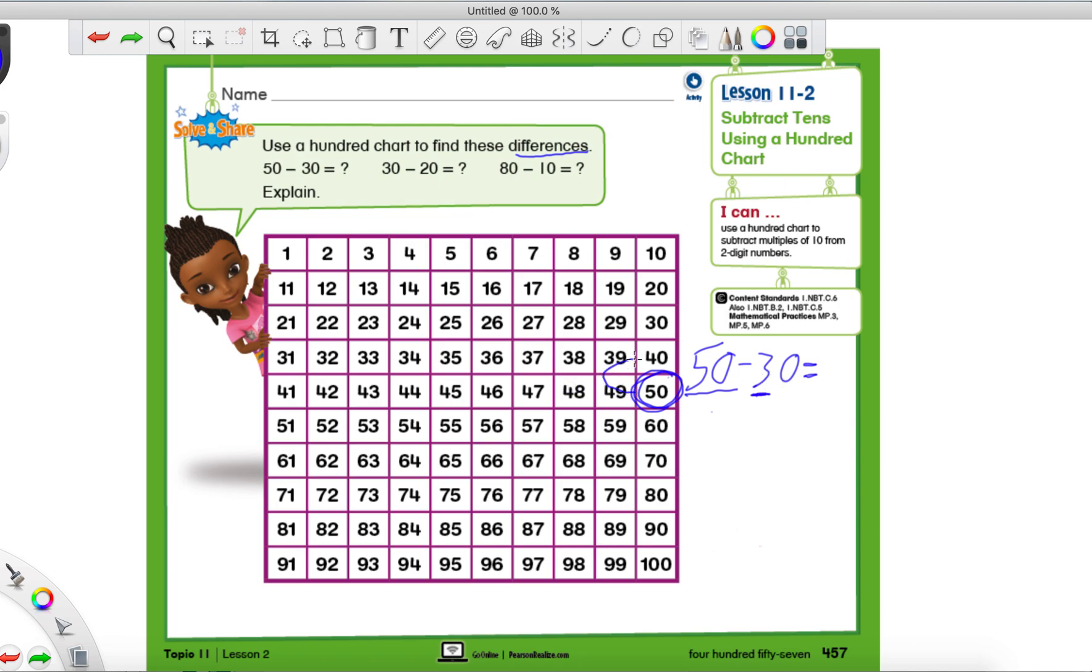So ten, twenty, thirty. And then we stop and we still land on 20. So either way, you can get the same answer. So let me just close chart real quick. So fifty minus thirty is 20.